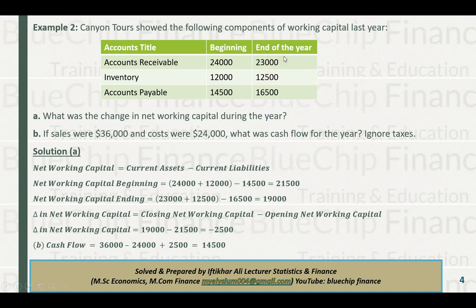End of year NWC: 23,000 plus 12,500 minus 16,500 equals 19,000. So net working capital decreased from 21,500 to 19,000, a change of minus 2,500. The second part asks: if sales were 36,000 and costs were 24,000, what was cash flow for the year? Ignore taxes.